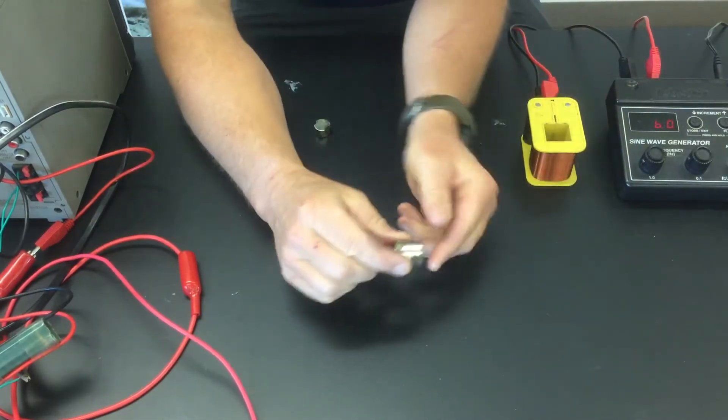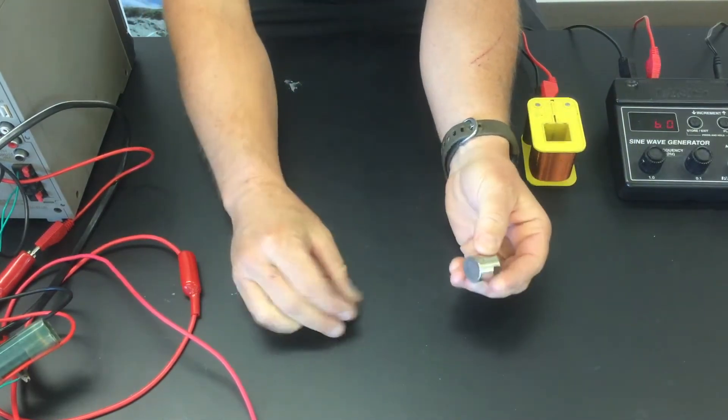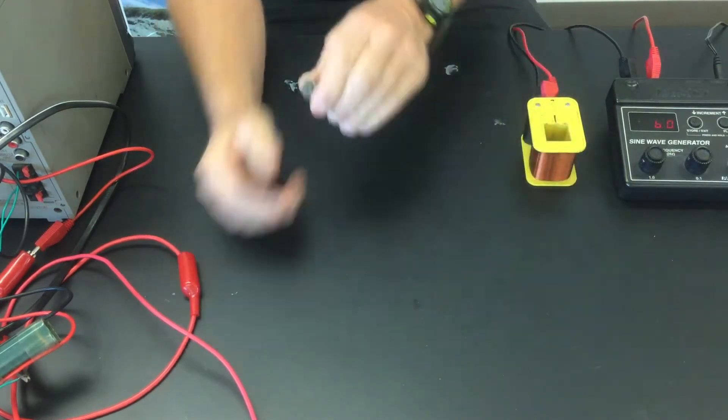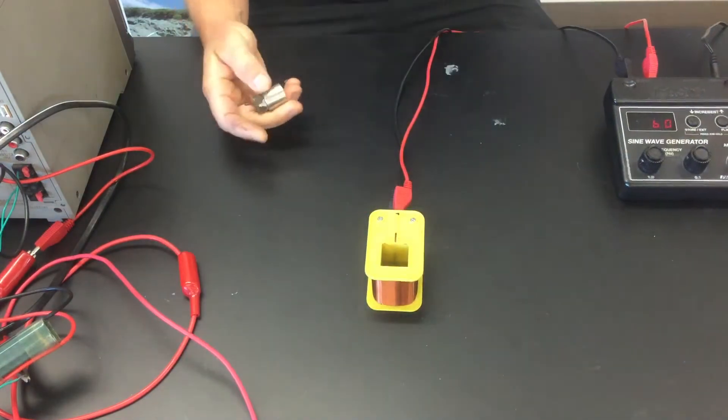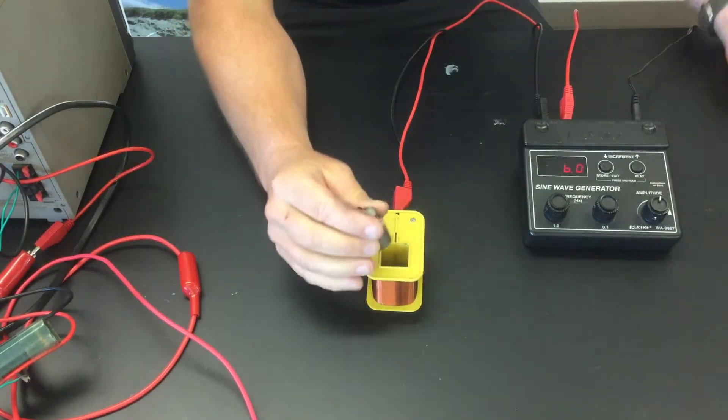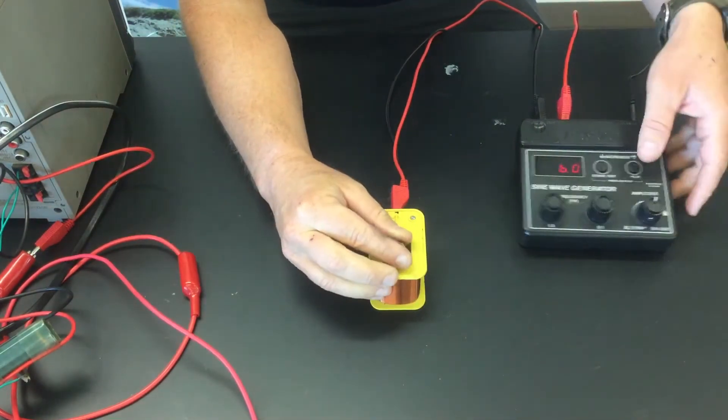Alright so what you're looking at right here is actually a pretty strong magnet. What we're gonna do is take this magnet and put it inside of a little coil that has electric current running in it, so I'm gonna drop this thing into the coil.